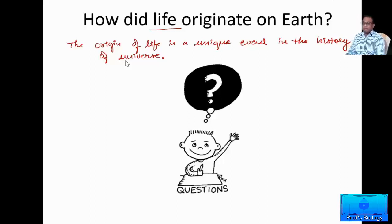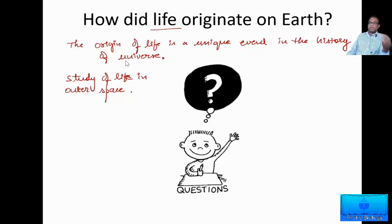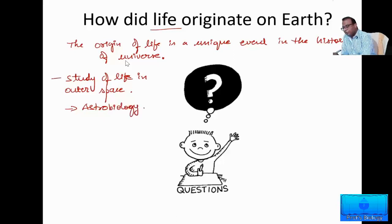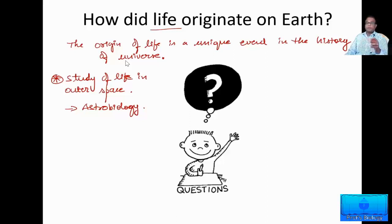What do we call the study of life in outer space? The people who look for life or signs of life on other planets — what they do is called astrobiology. Study of life on other planets or in space is known as astrobiology. So far, astrobiologists have not found life anywhere else in the universe other than the earth, and the origin of life is a very unique event in the entire history of the universe.